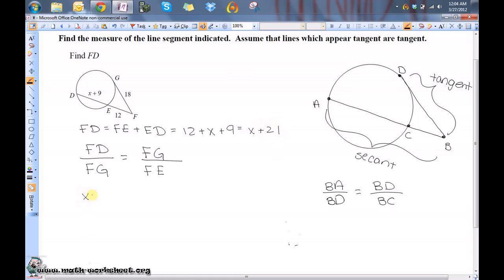So x plus 21 over FG is equal to 18. It's equal to FG, which is 18, over FE, which is just 12. So all I need to do is solve this proportion.